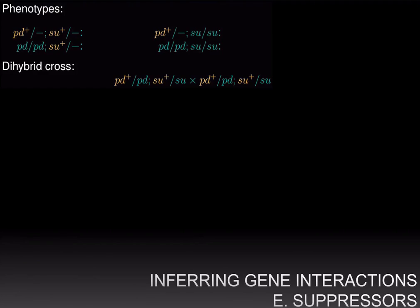Let us continue looking at diagnosing different types of genetic interactions by the phenotypic ratios they produce in the progeny of a dihybrid cross.